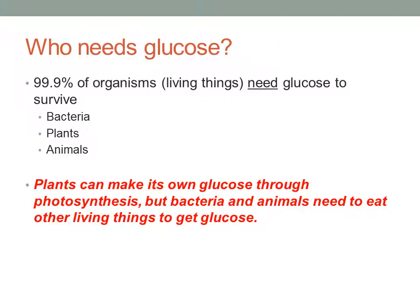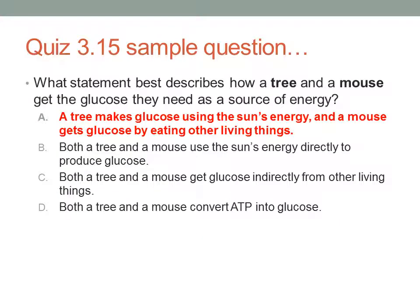So remember, we said that plants can make their own glucose, but bacteria and animals — which would include a mouse — would need to eat other living things to get glucose. So the best answer for this one would be A: A tree makes glucose using the sun's energy, and a mouse gets glucose by eating other living things.